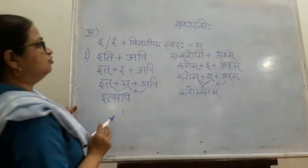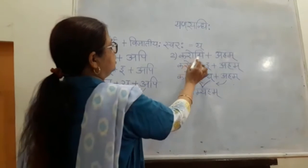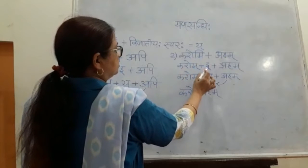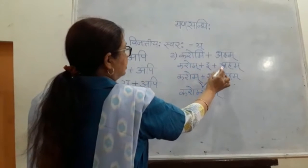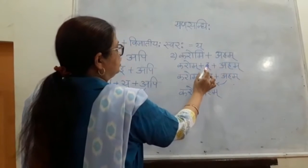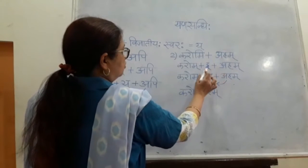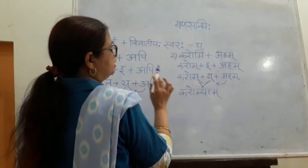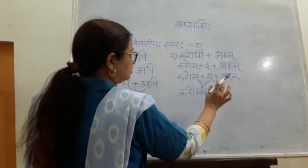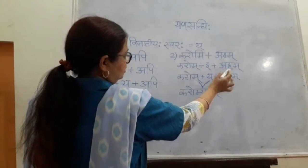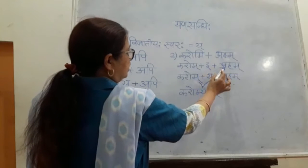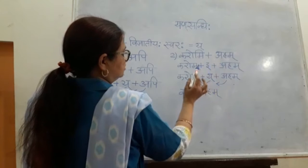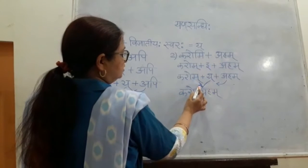We will see one more example: karomi plus aham. Karomi is ending in rasva i. In front of that we have aham, so we have a in front of i. The rule is we don't want i followed by i, but here i is followed by a from aham. So what we will do? We will replace this i with y halanta.